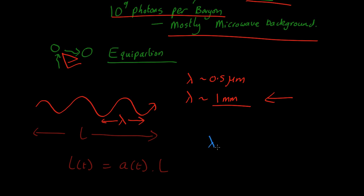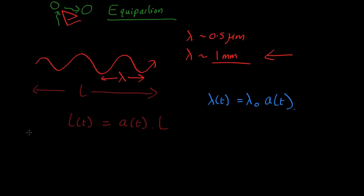The wavelength at some time T is equal to the wavelength now times A of T. How is that related to the energy? Well, quantum mechanics tells us that the energy of a photon is equal to Planck's constant times the speed of light divided by its wavelength.